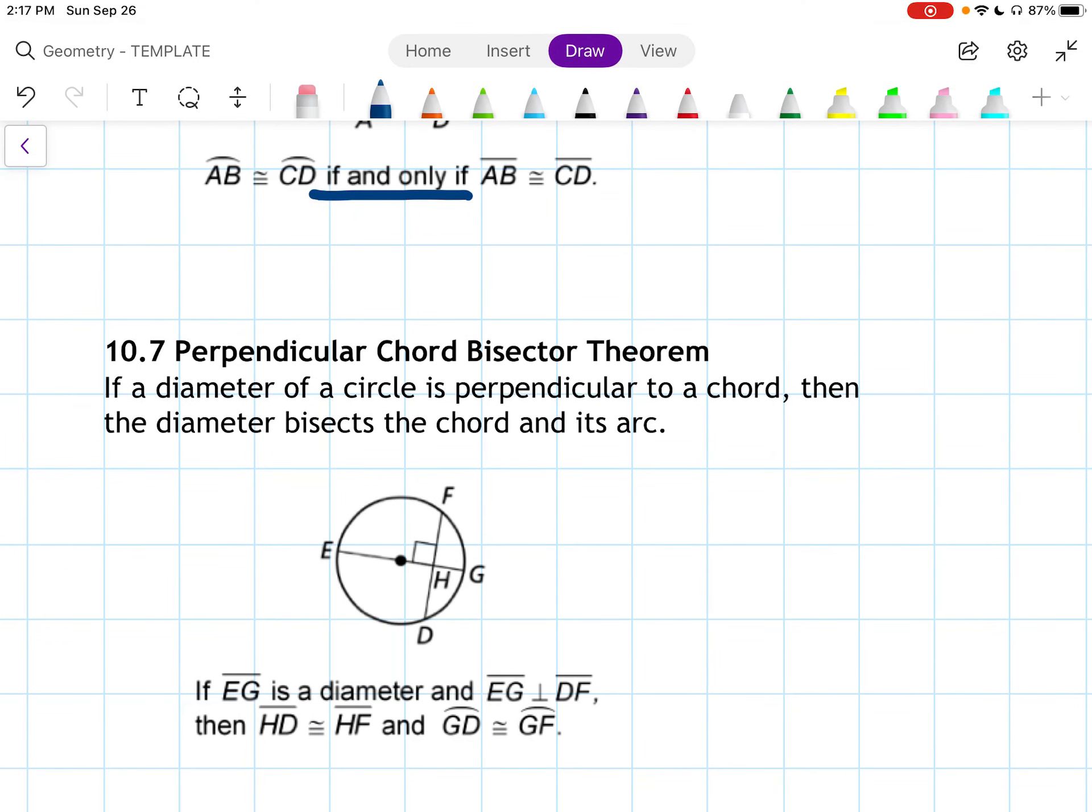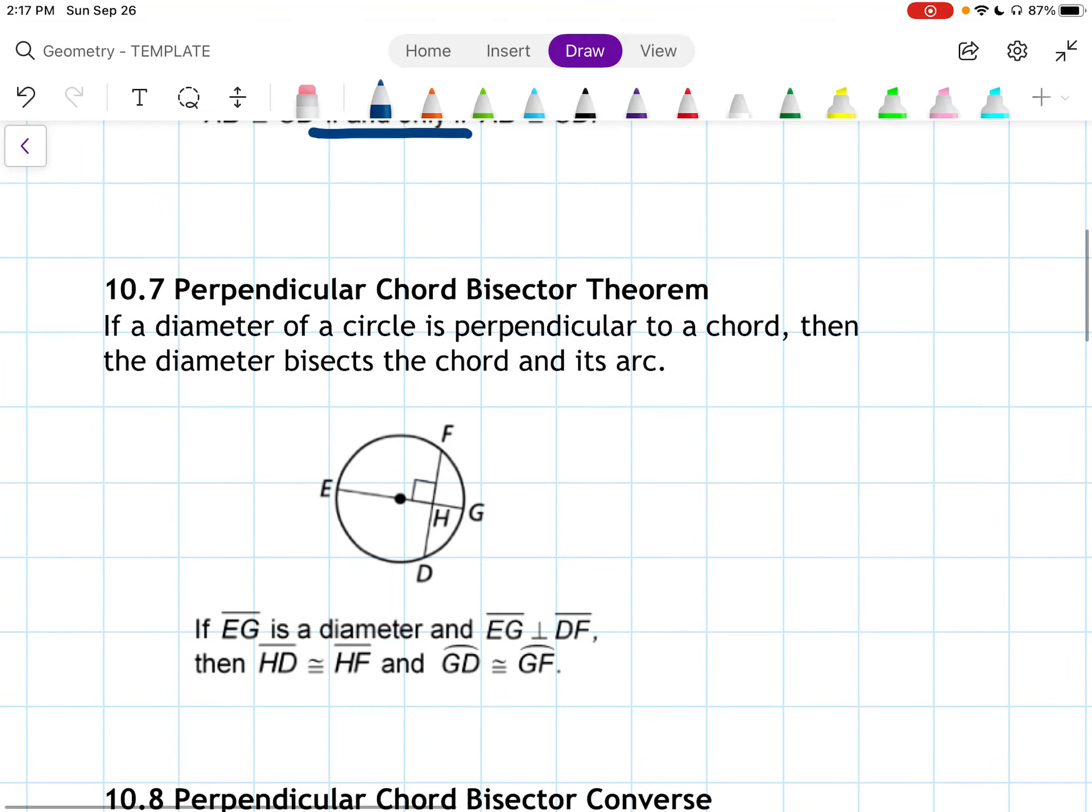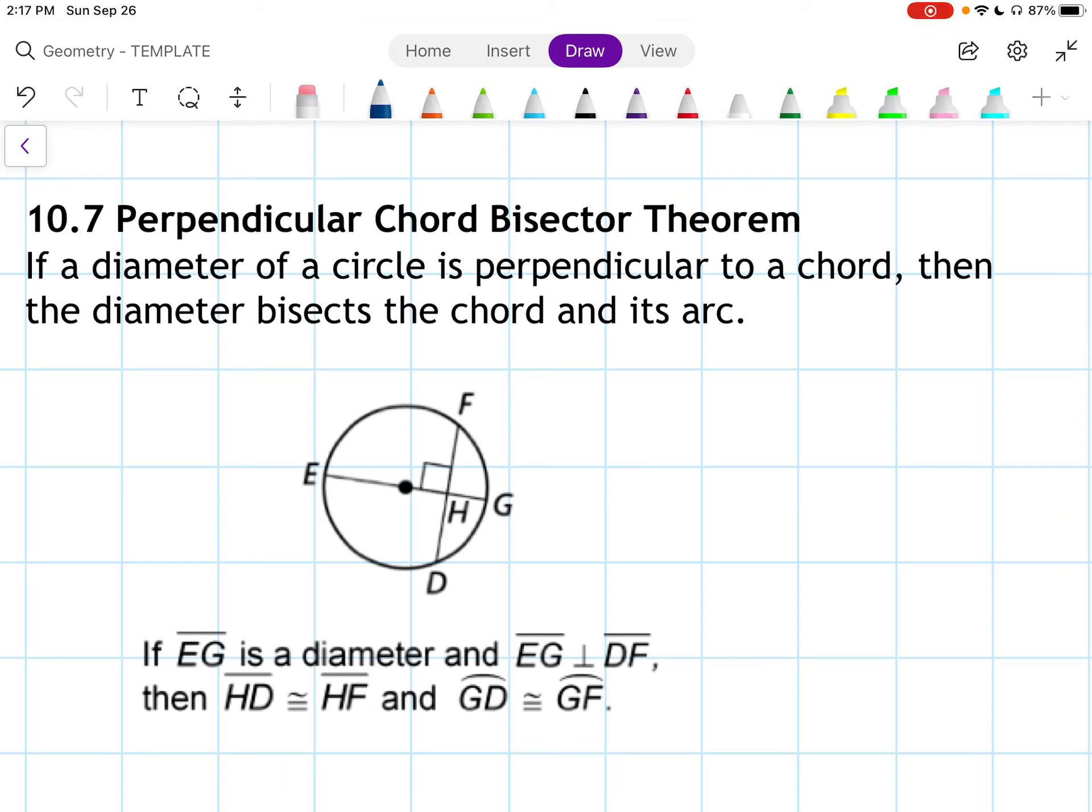Next up, if a diameter of a circle is perpendicular to a chord, then the diameter bisects the chord and its arc. So what this is saying is here's our diameter, it's EG. This piece of the chord and this piece of the chord are equal, and this piece of the arc is congruent to that piece of the arc.